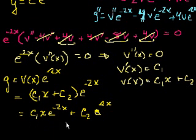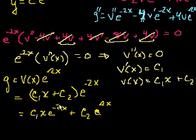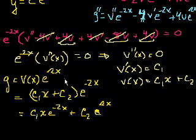If you're looking for a pattern: when you have a repeated root of your characteristic equation, the general solution uses that root twice — once as e^{rx} and once as x·e^{rx}. This works every time for second order, homogeneous, constant coefficient, linear equations.